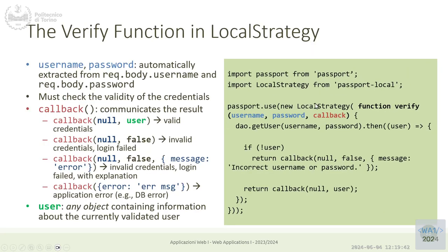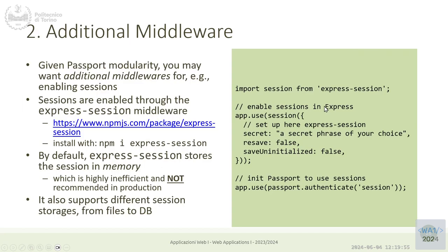The database does the crypto work and returns whether the user is valid or not. This information goes back to the verify function, which validates the login. This information must then go into the session. By default, Express doesn't generate session cookies — we need to add an extra middleware. We import the session middleware, register it in the app, and perform two steps: tell Express to use sessions, and tell Passport to store authentication information in the session.